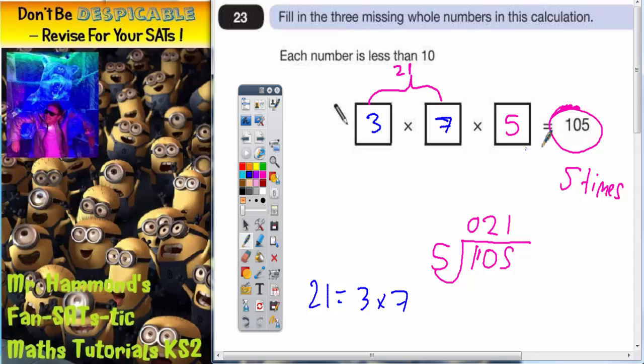Now, just as a double check to make sure it makes 105, let's check it. So 3 times 7 does indeed give us 21. So that bit works.